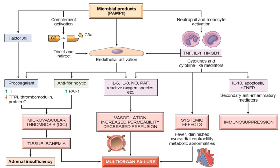An important example of metabolic abnormality in septic shock is Waterhouse-Friderichsen syndrome, usually associated with meningitis caused by Neisseria meningitidis, an important gram-negative bacterium. In Waterhouse-Friderichsen syndrome, there occur hemorrhages or necrosis in the adrenal gland as a result of a widespread inflammatory response, ultimately resulting in the development of septic shock in the patient.